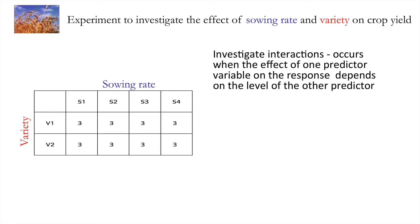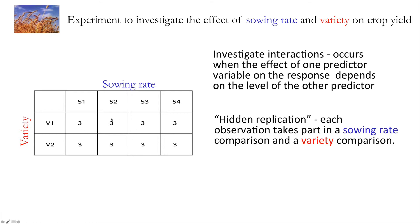So this type of design allows us to investigate interactions when the effect of one predictor variable on the response depends on the level of the other. We've got things covered because with this simple design we've got all of the combinations nicely evenly matched. It also means that any given observation can be used in not just one comparison for example between varieties but also across the way here between sowing rates. So with this design we have what's called hidden replication in that our observations are being used in several ways when conducting our analyses. This is of course a factorial design and in fact it's two factors here we've got variety and sowing rate and it's a four times two levels. So we've got four levels of sowing rate and two levels of the variety.